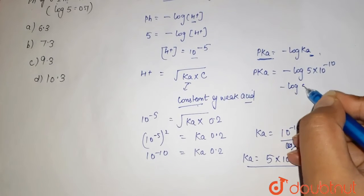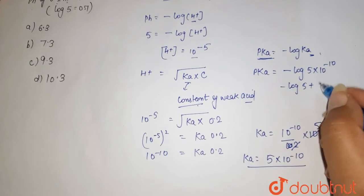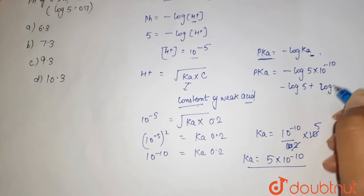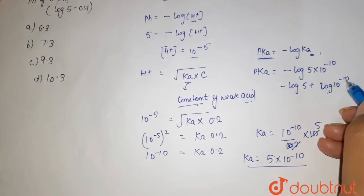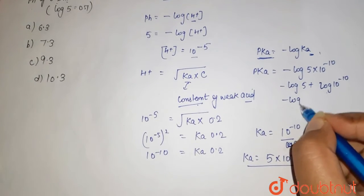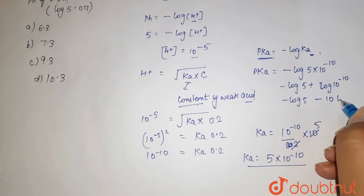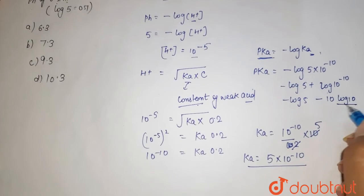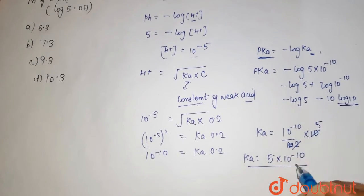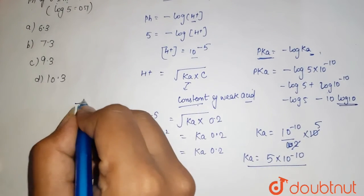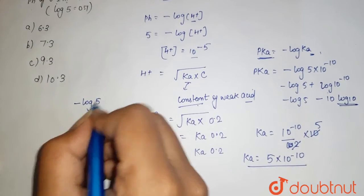So if you solve this, minus log 5 plus this log 10 to the power minus 10, now this will come outside. Here it is minus 10 log 10, and we know that log base 10 it is equal to 1, so it comes out to be - we will solve this over here - it is log 5,